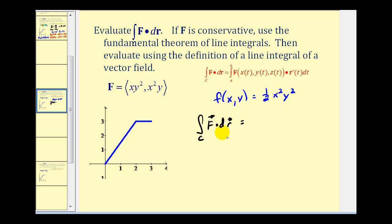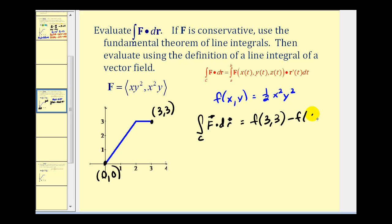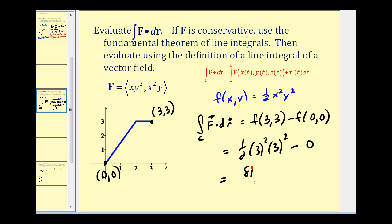Before we evaluate this, let's take a look at our path. We start at the origin, the point (0, 0), and we finish at the point (3, 3). These are the only two points we need to determine the value of this line integral. This is going to be equal to f of (3, 3) minus f of (0, 0). Replacing x and y with three, we'll have one-half times three-squared times three-squared, minus zero. So we have nine times nine, that's eighty-one, times one-half, or eighty-one halves. So using the Fundamental Theorem of Line Integrals, we were able to determine the value of this line integral using the potential function.